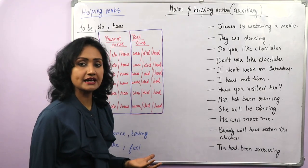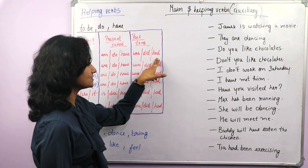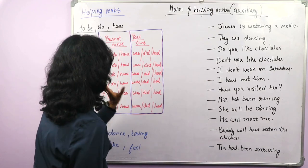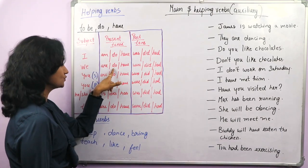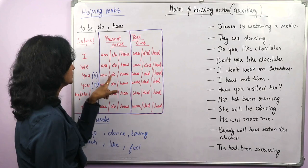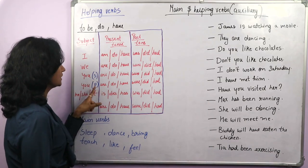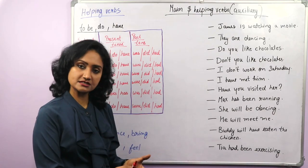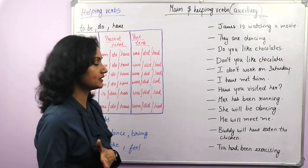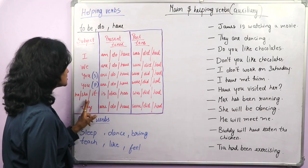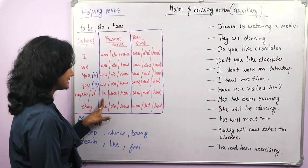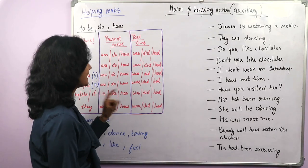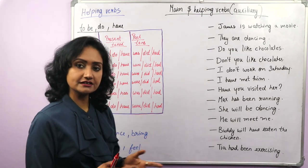The forms of do and have in past are did and had — everywhere it is did and had. The change is only with do. With you: do, singular and plural. We know that second person is always you. With he, she, it: use is; instead of do use does; and has, not have. We have done this while making negative sentences.